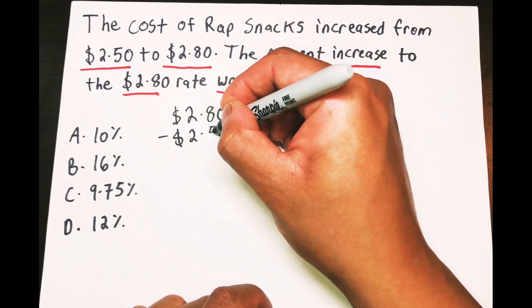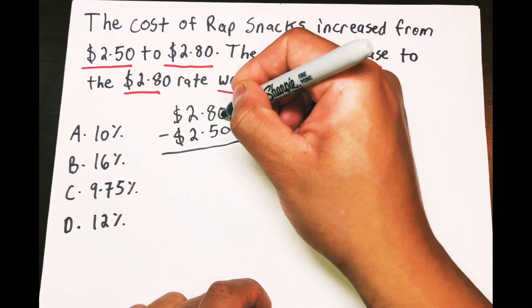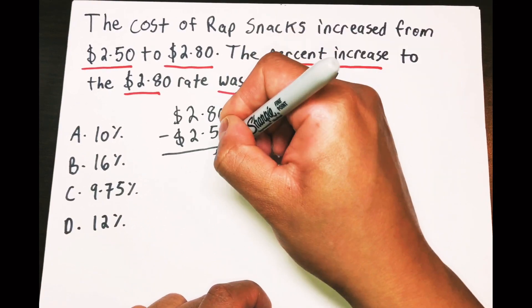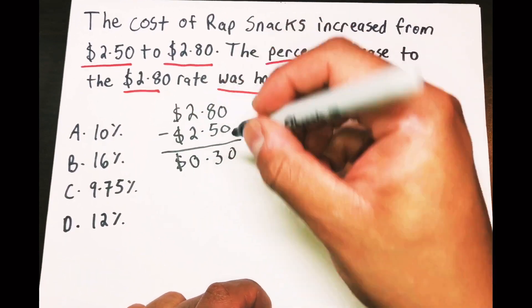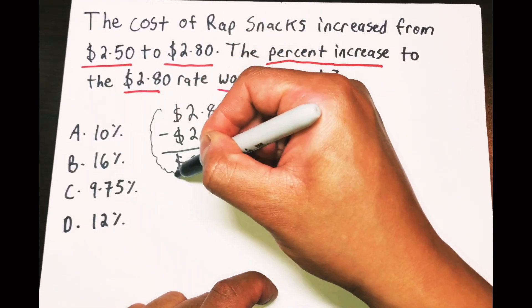Zero minus zero is zero, eight minus five is three, bring out a decimal point, two minus two is zero, and we have our dollar sign there. Okay, we have a 30 cents difference, okay, that's gonna be important.